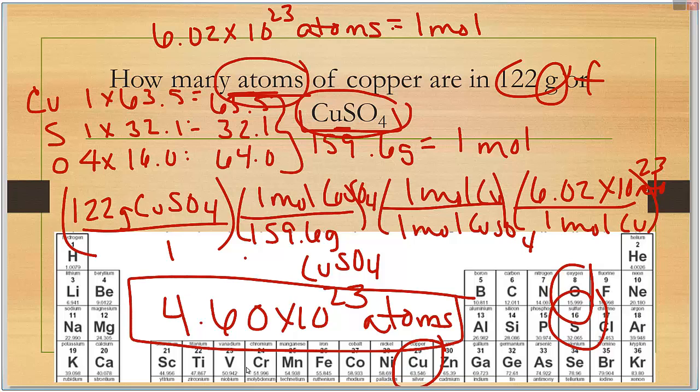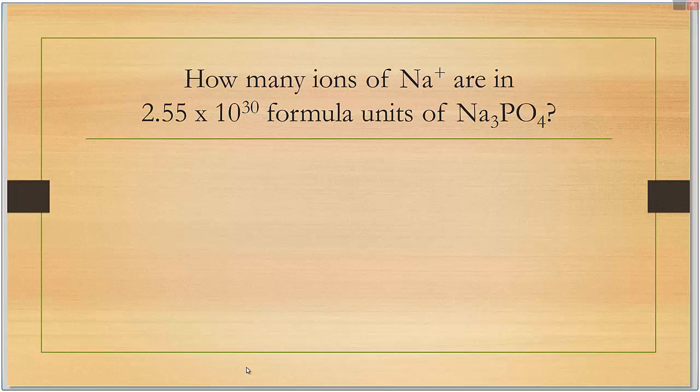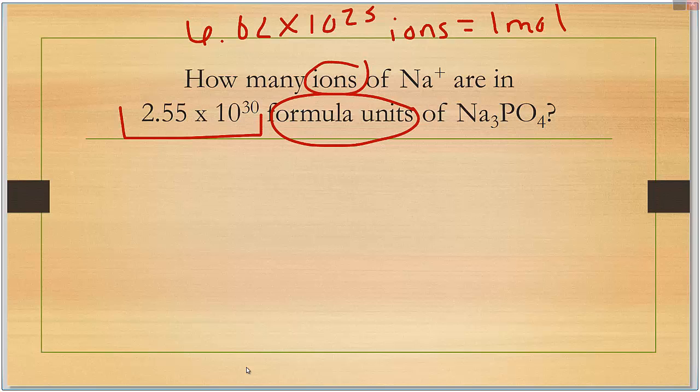We'll have one final example. This one's a little bit more difficult. How many ions, that's one of those words that you're going to be looking for, are in 2.55 times 10 to the 30th formula units this time. So we don't even have grams this time. We don't need the periodic table. You only need the periodic table if you see grams. When you see atoms, ions, molecules, or formula units, you want to make sure to use Avogadro's number. So here we have 6.02 times 10 to the 23rd formula units in one mole. Because Na3PO4 is a formula unit.